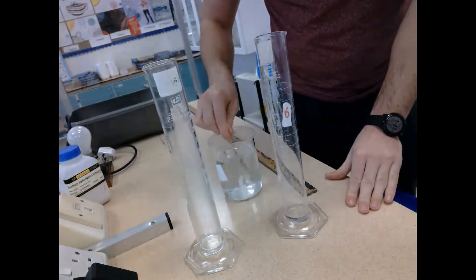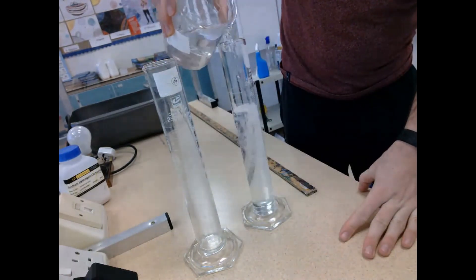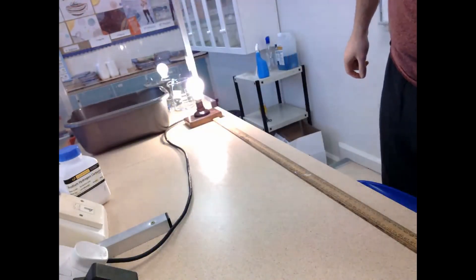Now once I have my graduated cylinder set up, it is now time to set up the lamp. What I'll do is I'll place this lamp one meter away from my graduated cylinders, and then I'm going to take my elodea and get this ready.